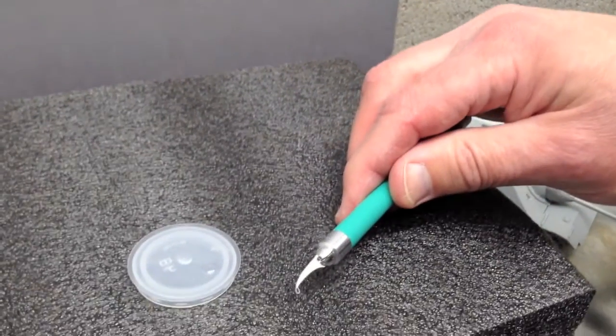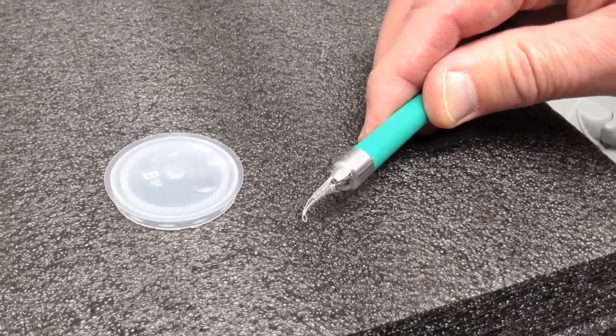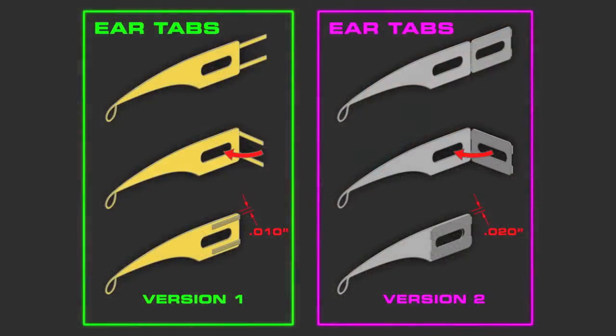A couple of things that I want to talk about. Obviously, we're calling this one the version 2. So I just want to back up for a moment and talk about the version 1. When we first came out with the version 1, it was made out of brass. It was rather thin, and we just had thin rabbit ears on the back that folded over.